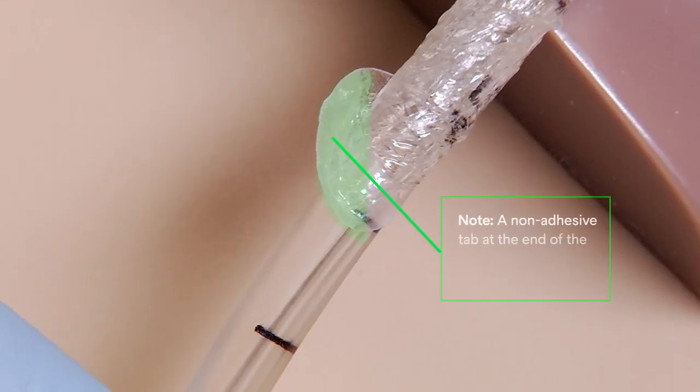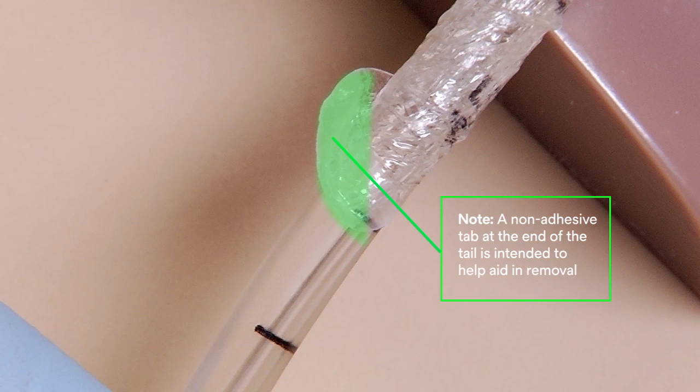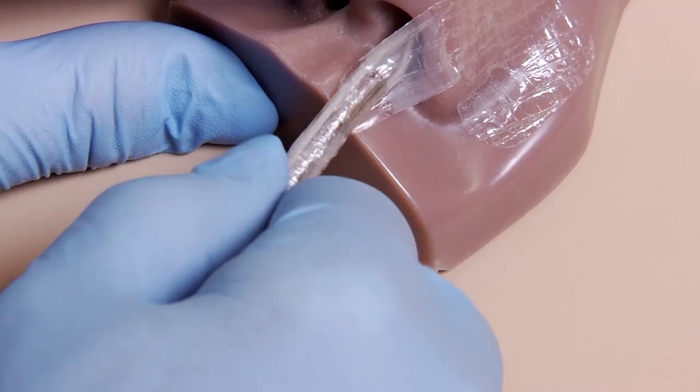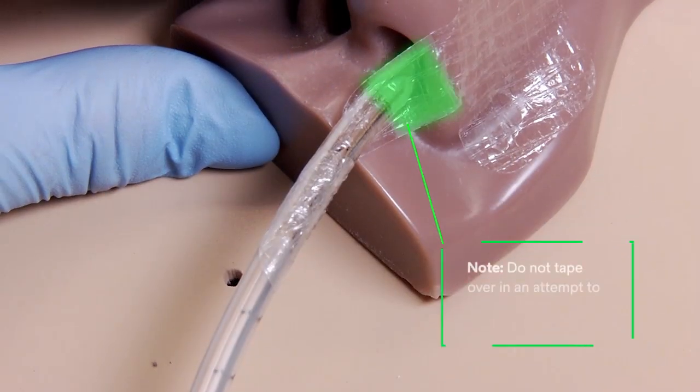Remember, the non-adhesive section at the tip of the trunk is intentional to make it easier to find the tip when time to remove. Apply pressure a final time to ensure adhesion to the nose and to the tubing. Ensure the tube is hanging freely and do not tape over the non-adhesive section in the middle of the device.